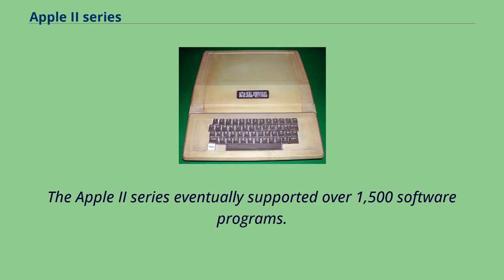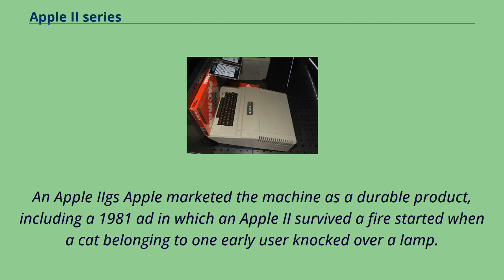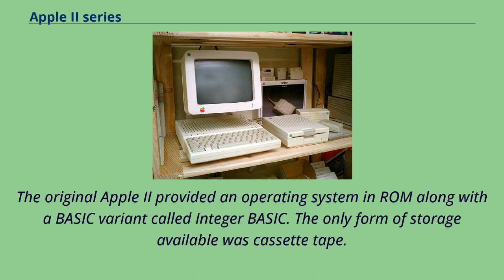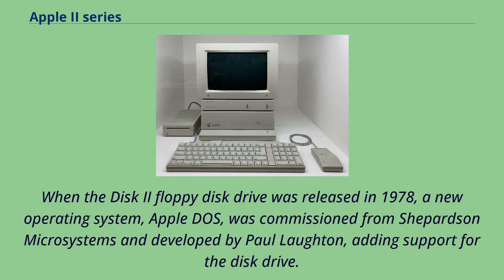Apple marketed the machine as a durable product, including a 1981 ad in which an Apple II survived a fire. The original Apple II provided an operating system in ROM along with a BASIC variant called Integer Basic. The only form of storage available was cassette tape. When the Disk II floppy disk drive was released in 1978, a new operating system, Apple DOS, was commissioned from Shepardson Microsystems and developed by Paul Lawton, adding support for the disk drive.